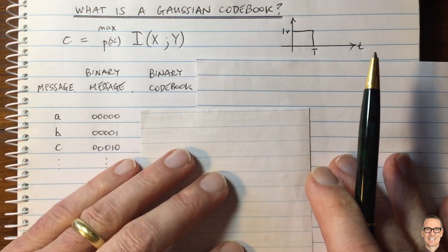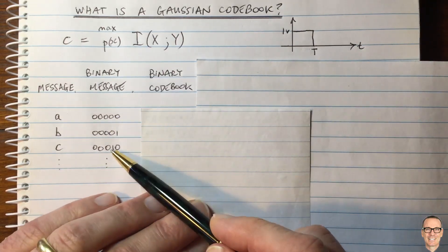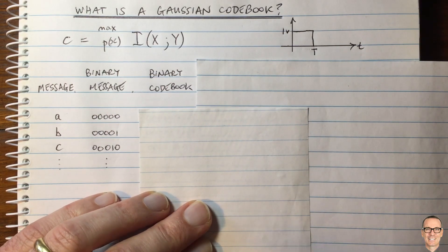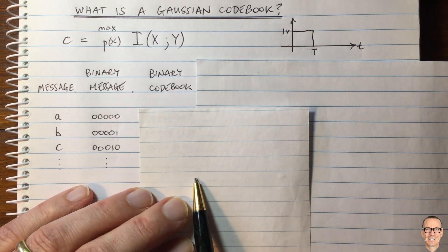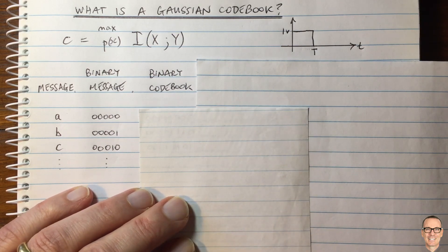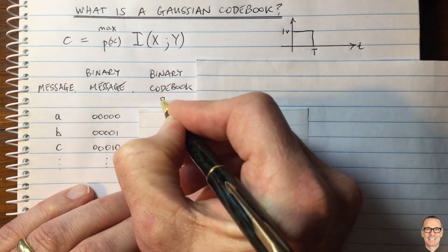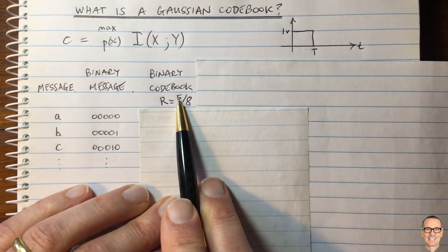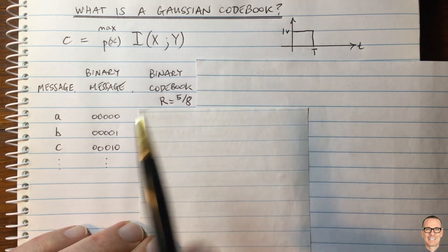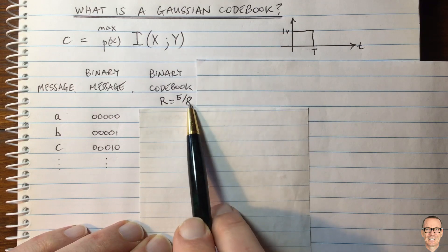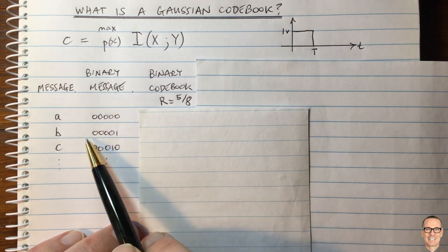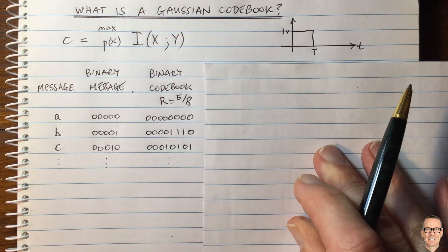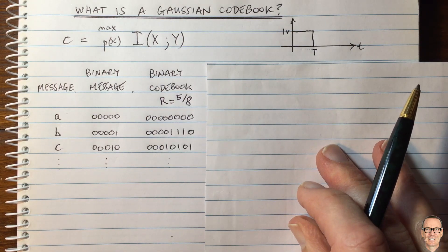Let's think about a binary codebook for this scenario. Let's say the channel we're dealing with gets, on average, three errors every eight bits transmitted. That means the rate is going to be five divided by eight — you get five reliable bits through for every eight that you send. So we need to change this sequence of five for each letter into a sequence of length eight. And here we have what we call a binary codebook.